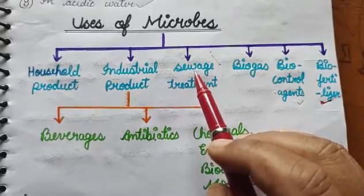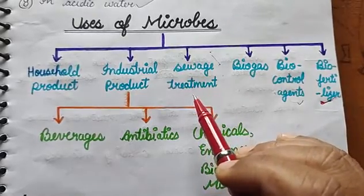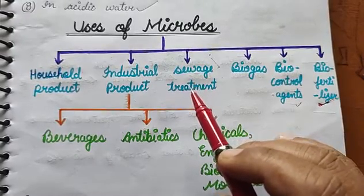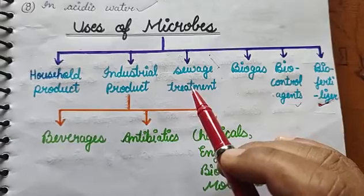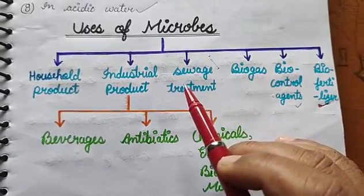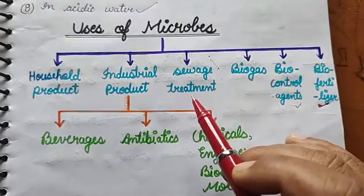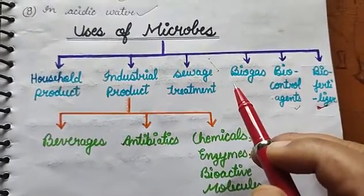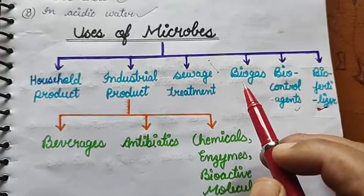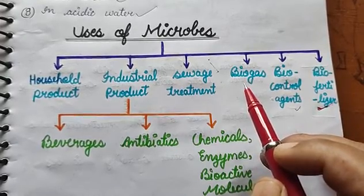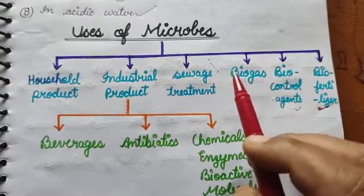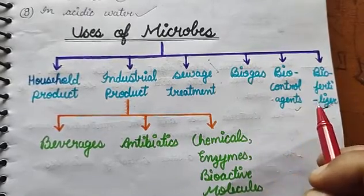Third is sewage treatment. The sewage treatment plant totally depends upon microbes. Without microbes, sewage treatment is not possible. Fourth is to produce biogas. Then bio control agents — there are microbes used in bio fertilizers.